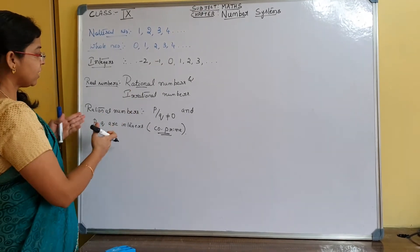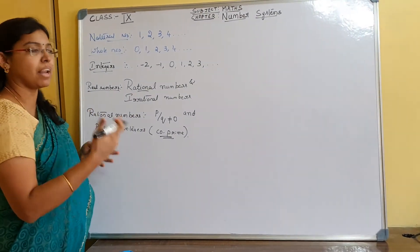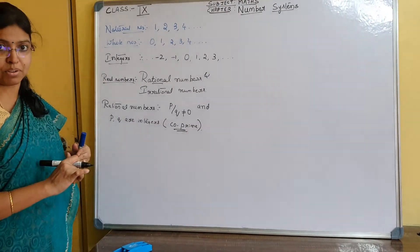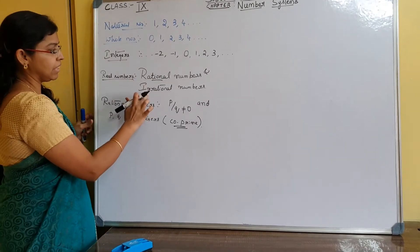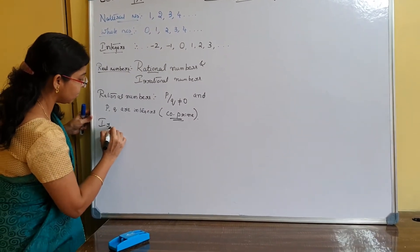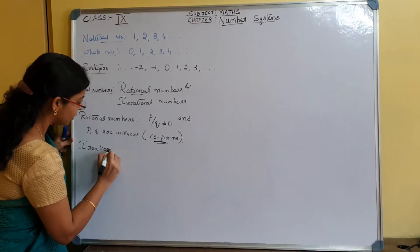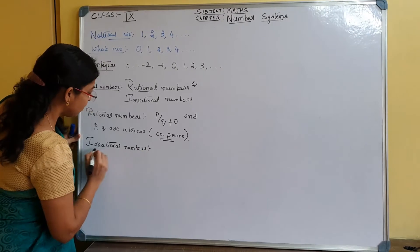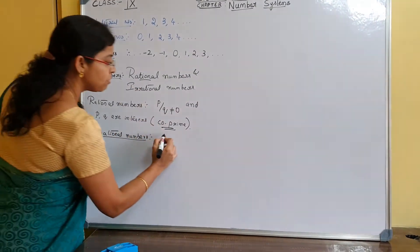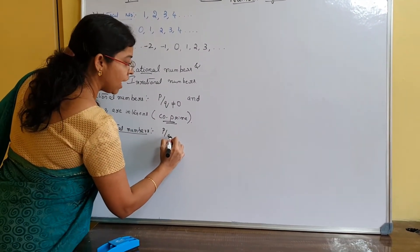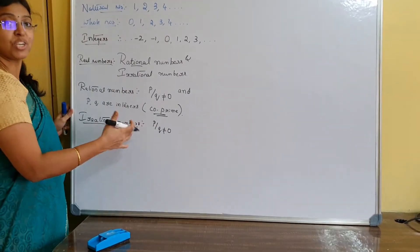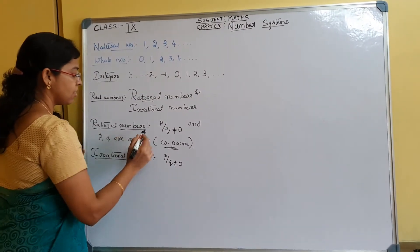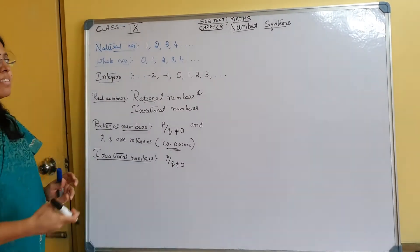Now, where are these rational numbers? Where do they exist on a number line? We know where the natural numbers, whole numbers, and integers are. Where are these real numbers? We will cover irrational numbers to complete real numbers. What is an irrational number? Numbers which cannot be written in the form of P by Q — where Q is not equal to 0 — are called irrational numbers.